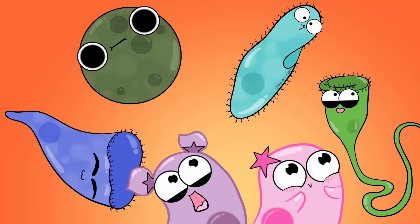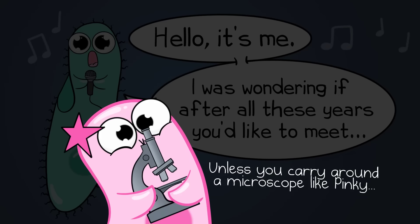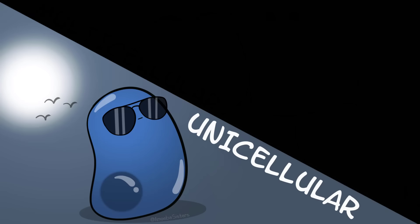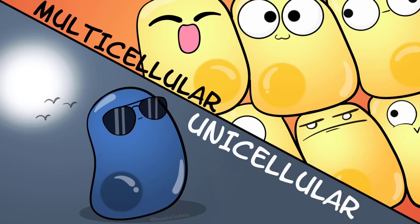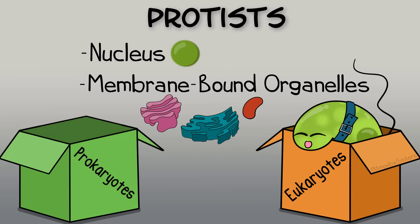Part of it is that we happen to really love amoebas and other protists. It turns out that sometimes people forget about protists — they're not exactly easy to see. Most protists are microscopic, and most are unicellular, meaning they are made up of one cell, although there are some multicellular protists. Protists are eukaryotes, which means that unlike prokaryotes, they do have a nucleus and other membrane-bound organelles.